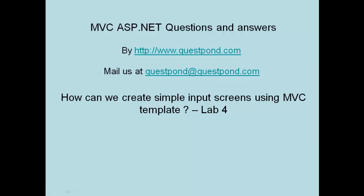In this example we will create an input screen with two or three text boxes where we can take the customer ID, customer code, and amount. Whatever we type in those text boxes, we will create an object of the model and pass it to a view to display. There will be a submit button; when we click it the customer object will be created and then displayed on a view.